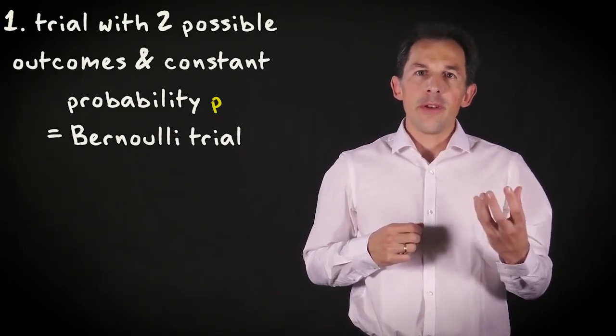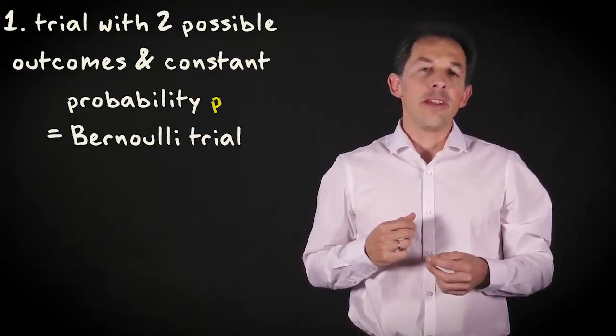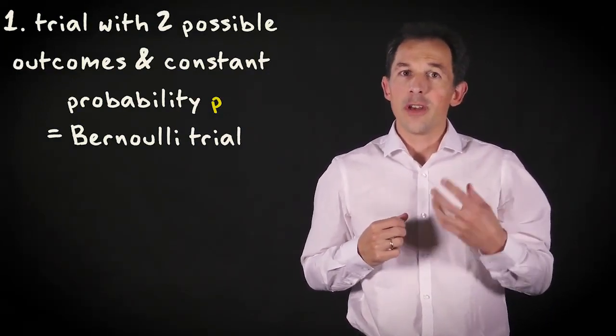In fact, you have now already encountered the three ingredients for a binomial distribution. First, there is a phenomenon or trial with two possible outcomes and a constant probability of success. This is called a Bernoulli trial. Second, you observe the outcome of the trial n times.